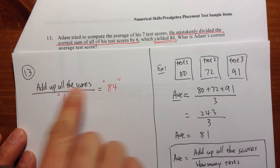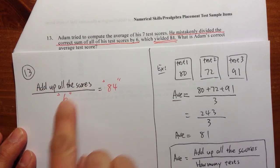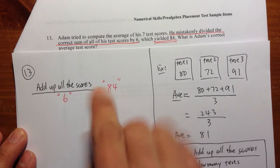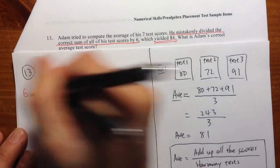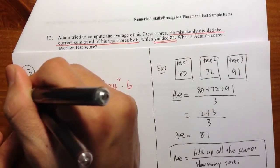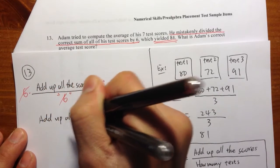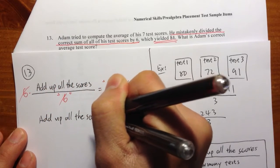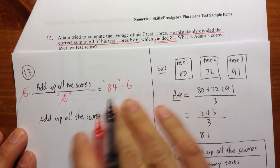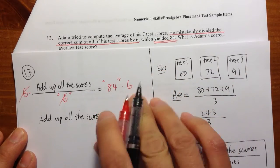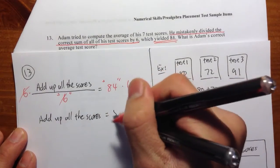So let's see how we do this. What we can do to figure out the correct sum, or when he added all the scores, divided by 6, he got 84. So what we can do first is multiply both sides by 6. So the 6 cancels out. And that means when you add up all the scores, he got 6 times 84. 6 times 84 is 504.